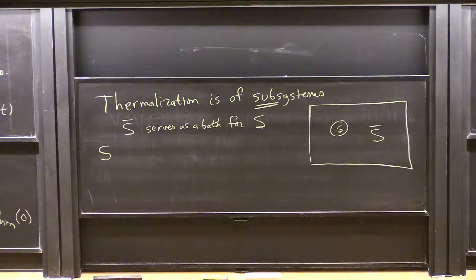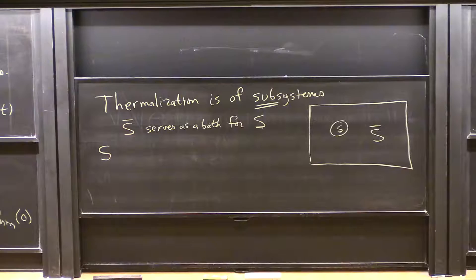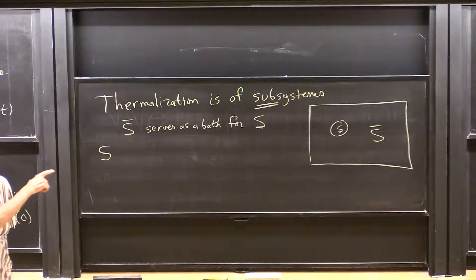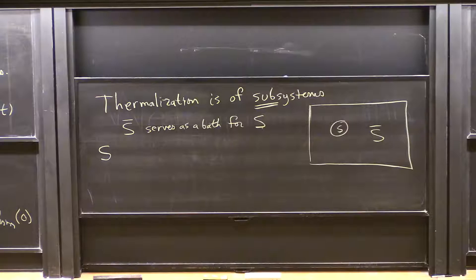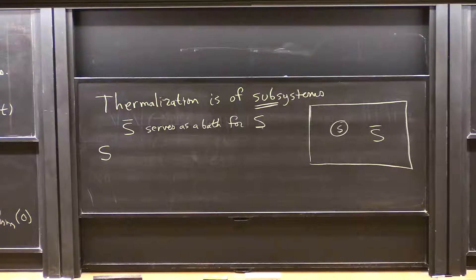When you find thermalization for a subsystem, if you take two different subsystems, how are they related to each other? When the system thermalizes, they both thermalize to the same thermodynamic parameters. So thermalization is thermalization of all subsystems — except for some special cases. They all thermalize to the same temperature, the same chemical potential, etc. So you can define thermalization for the whole many-body system as thermalization of subsystems.